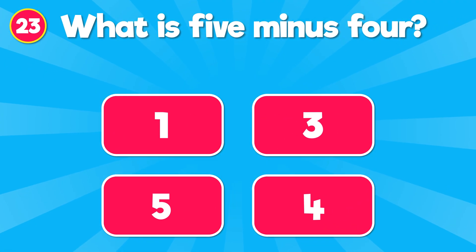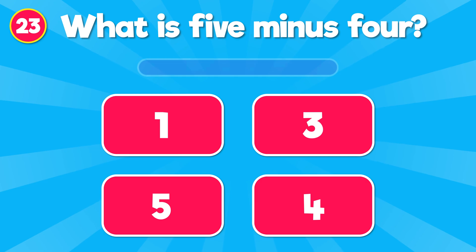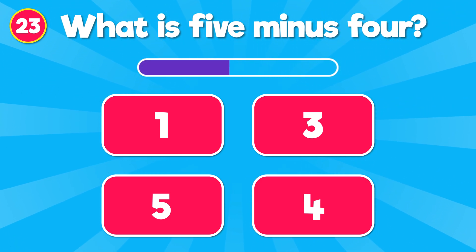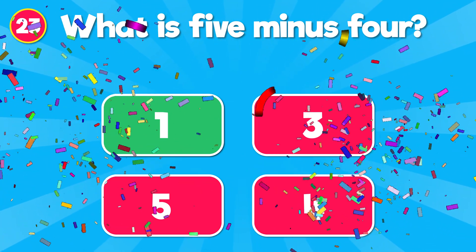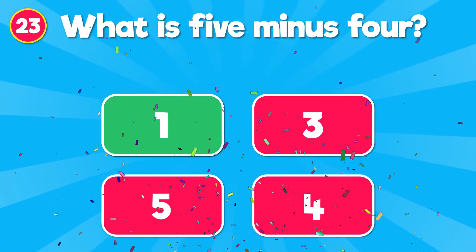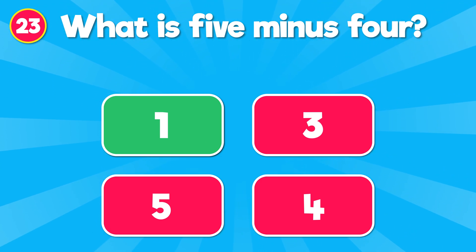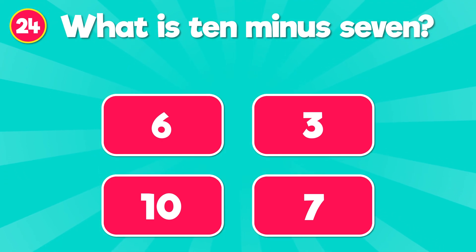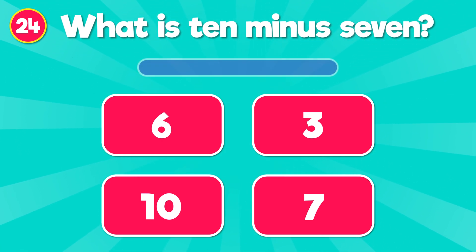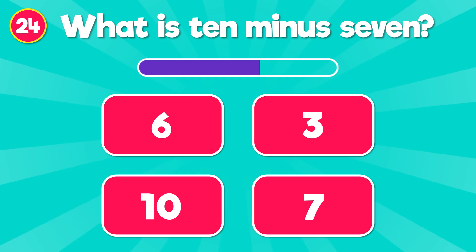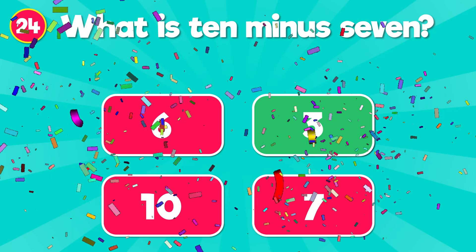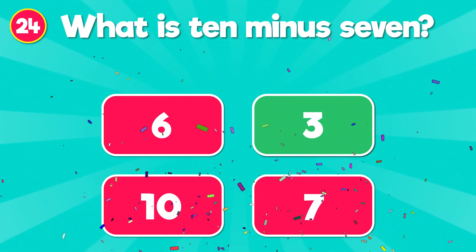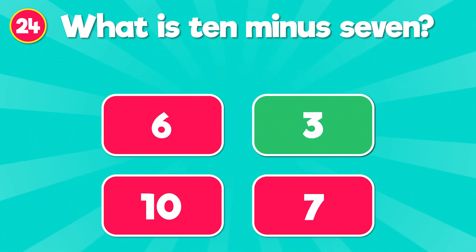What is 5 minus 4? The correct answer is 1. 5 minus 4 is 1. What is 10 minus 7? The correct answer is 3. 10 minus 7 is 3.